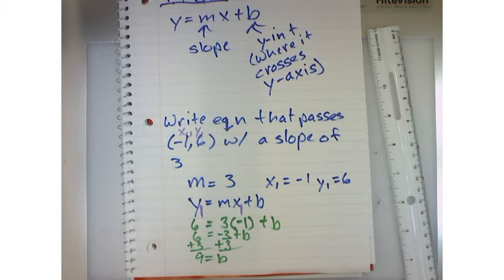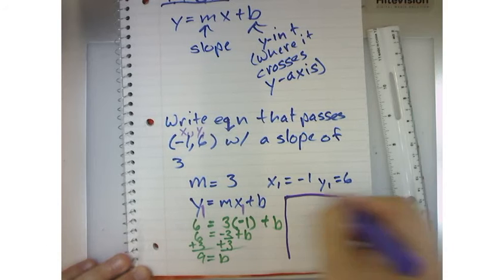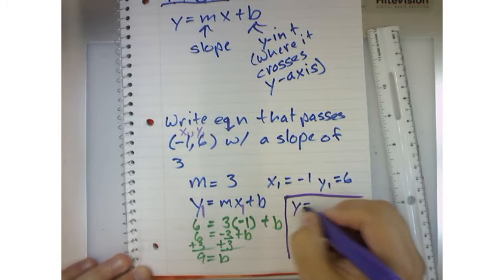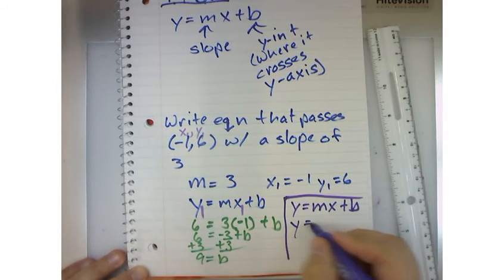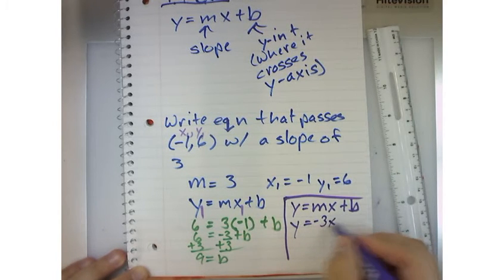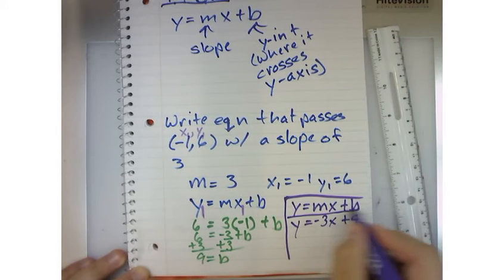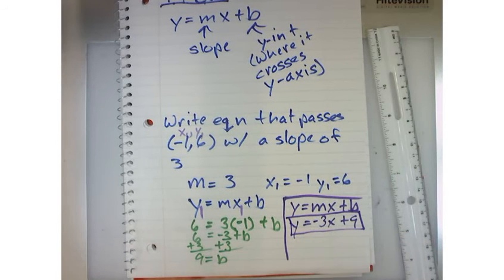Now, if that's the case, what's my equation of the line in slope-intercept form? Yeah. So we just say y equals mx plus b. Now that we know what m and b are, it's y equals negative 3x plus 9. So technically, this is the answer they're looking for. Does that make sense? Any questions?